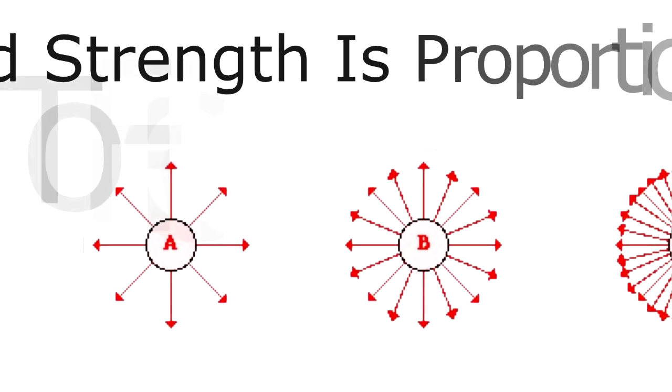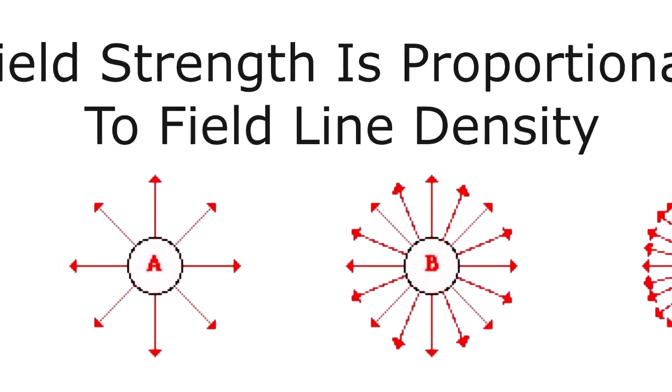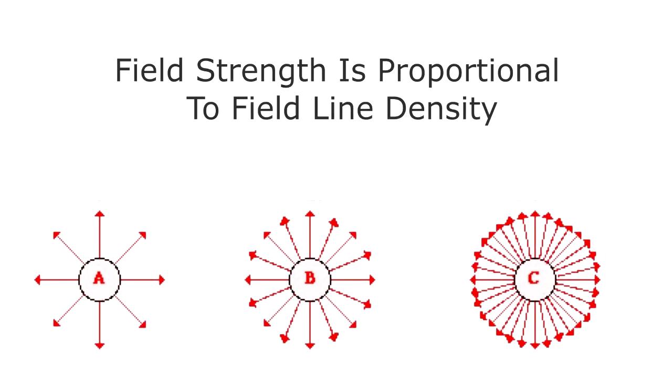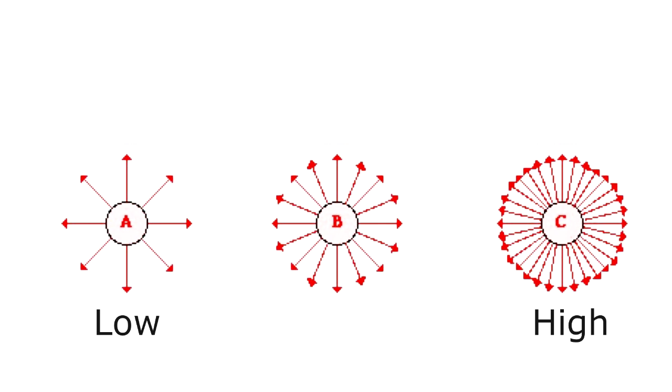Remember that the electric field strength visually is proportional to the density of electric field lines. The more densely the flux lines are arranged, the greater the intensity or strength of the field.